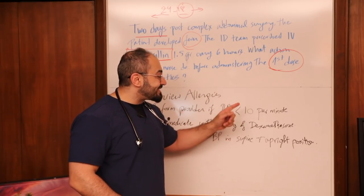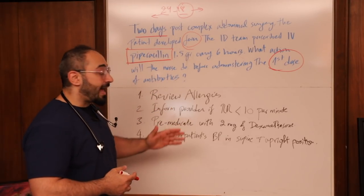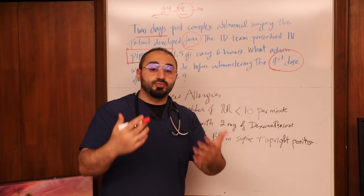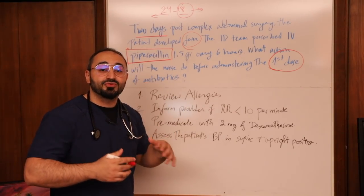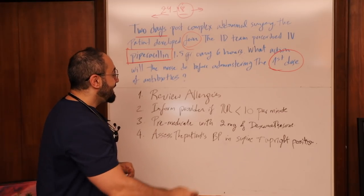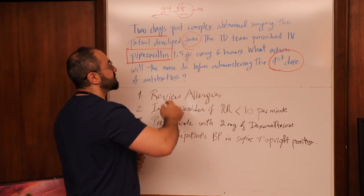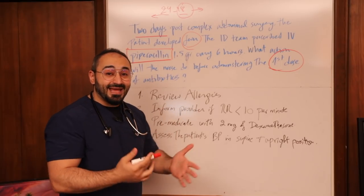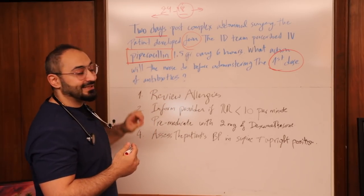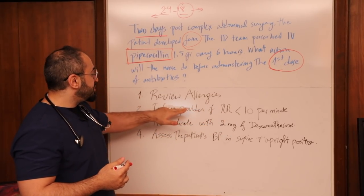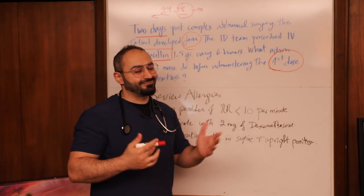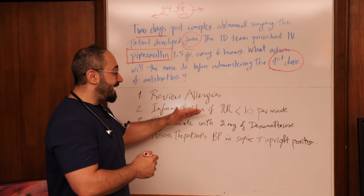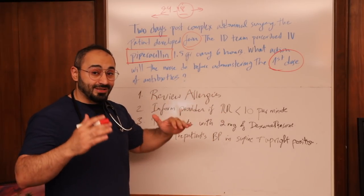Option two: inform the provider if the respiratory rate is less than 10 per minute. Generally, any respiratory rate below 10 — bradypnea — you need to inform the provider. But is this relevant here? I'm talking about piperacillin. Is respiratory depression a side effect of piperacillin? It's not. So this option is irrelevant to the question.